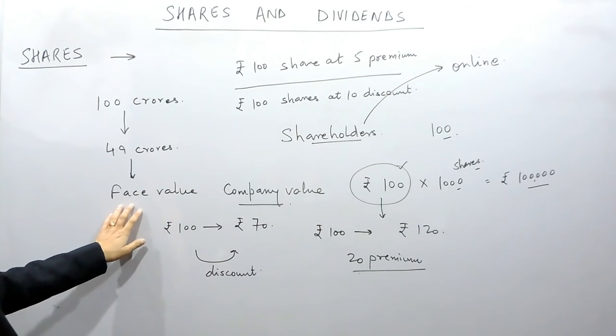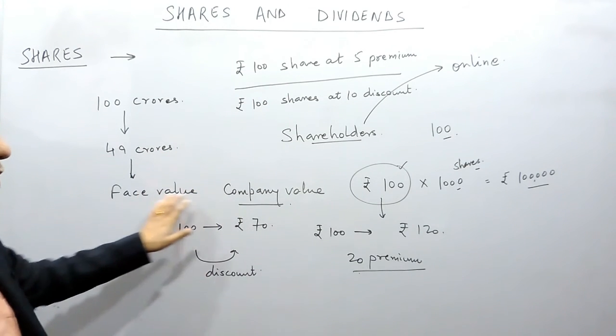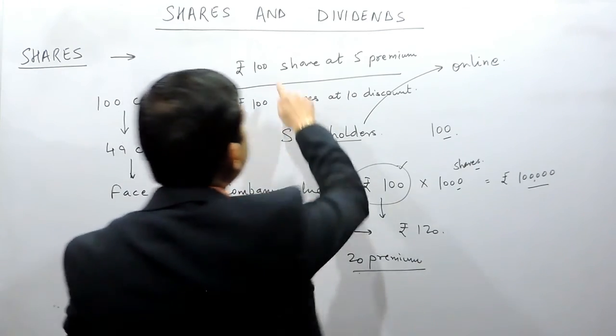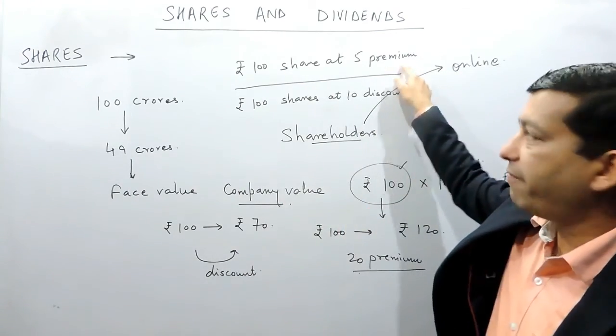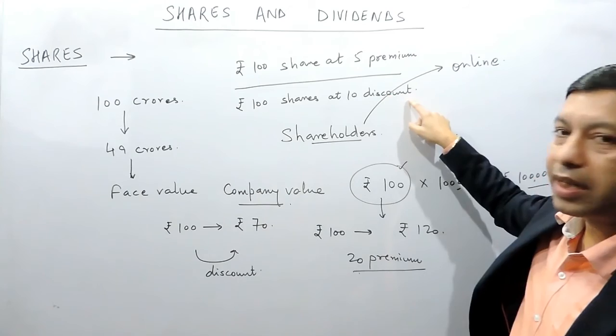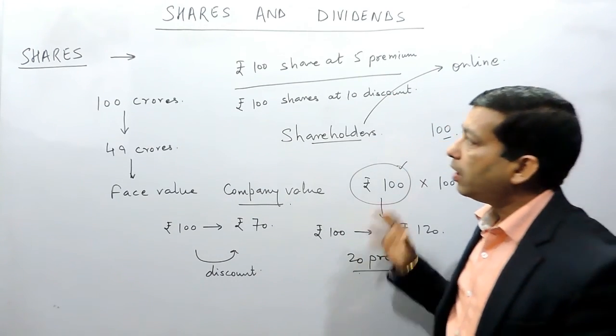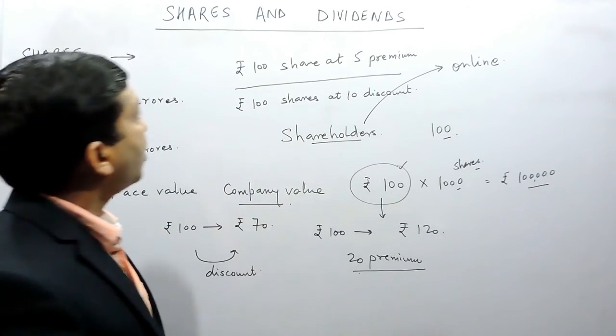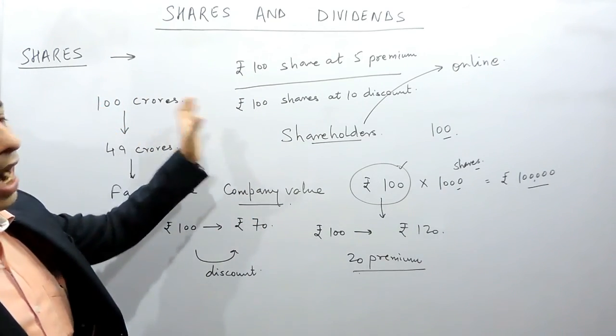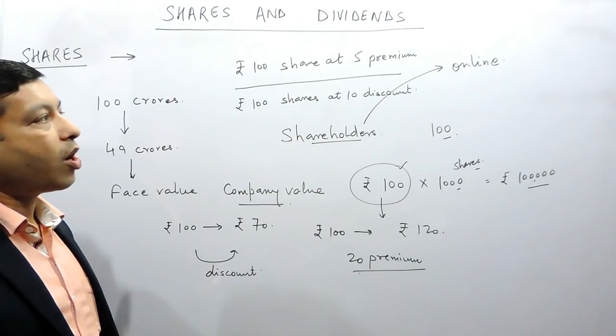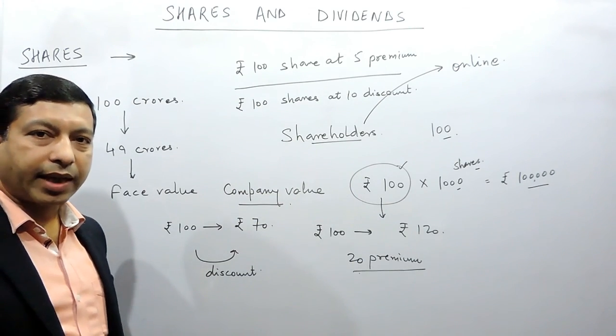We can purchase the share at the face value or the company value. We can purchase the share at premium and we can also purchase the share at discount. That depends on the goodwill of the company. In the next video, we will talk about the dividend and how it is being distributed among all the shareholders. Thank you.